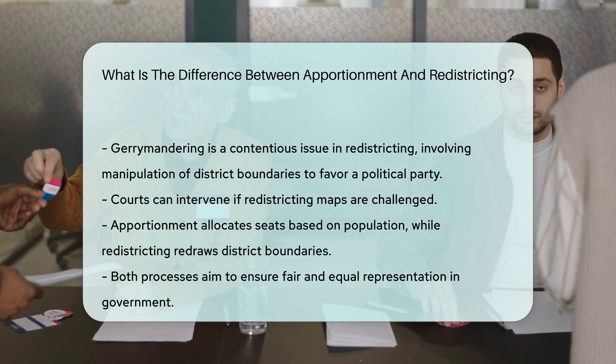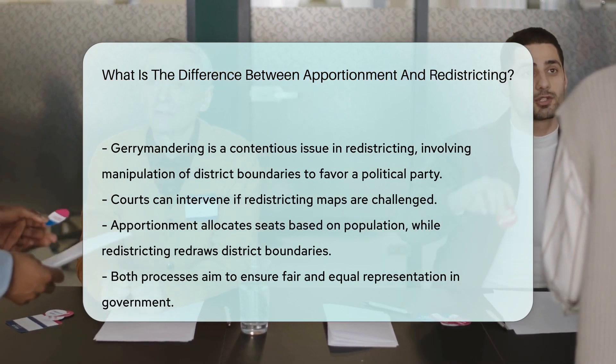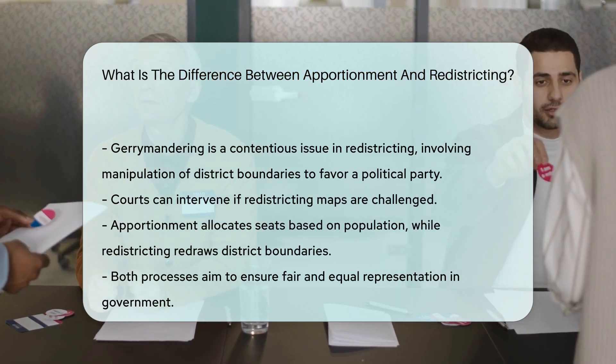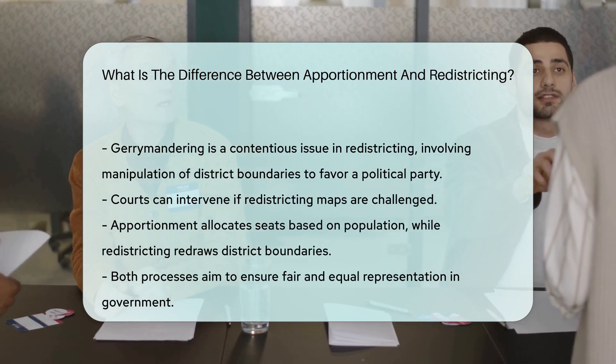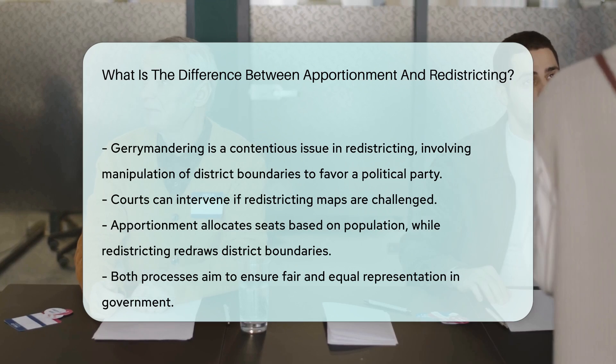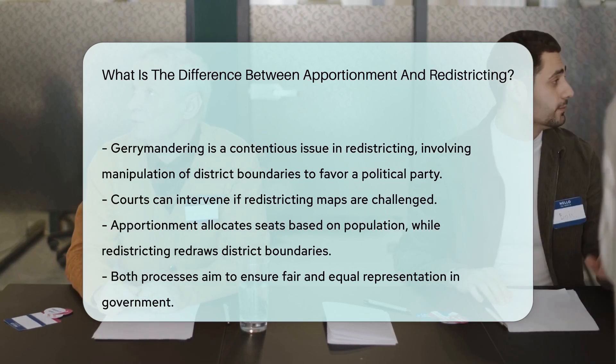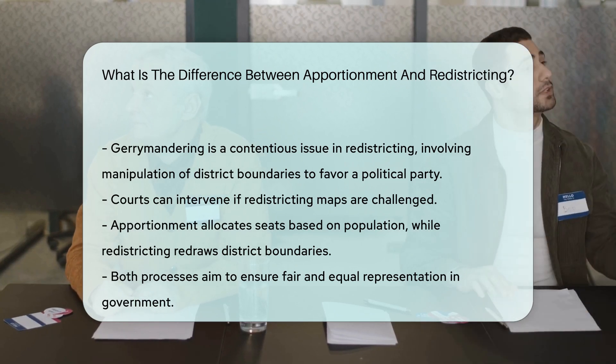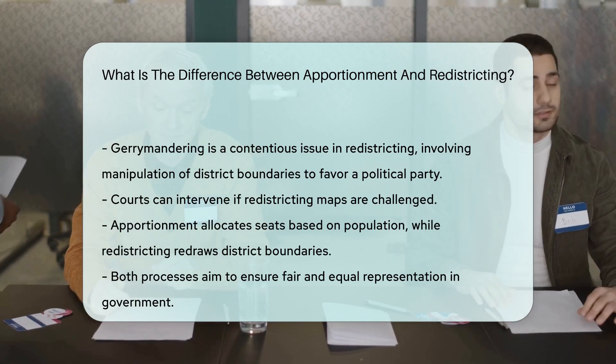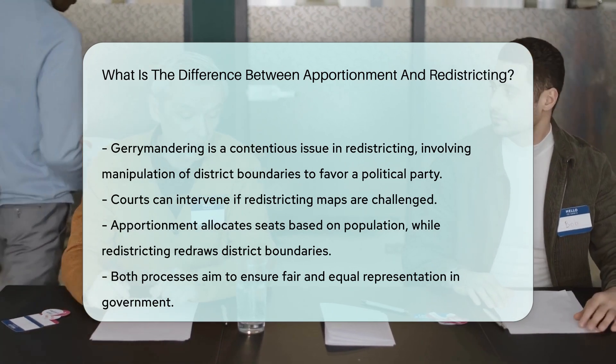In summary, apportionment allocates seats based on population, while redistricting redraws district boundaries. Both processes aim to ensure fair and equal representation in government.